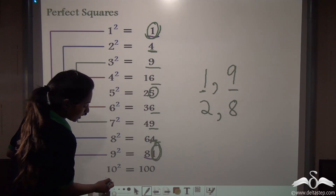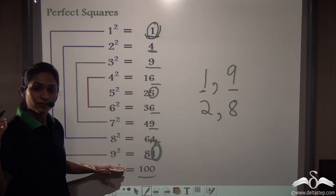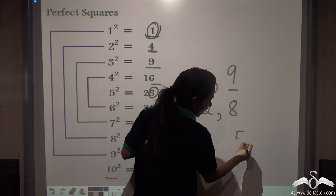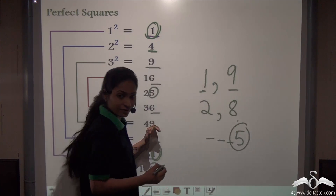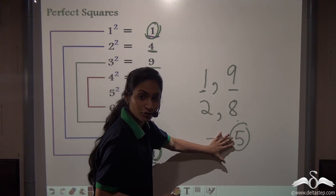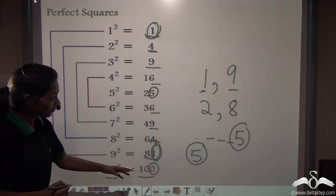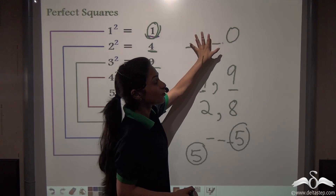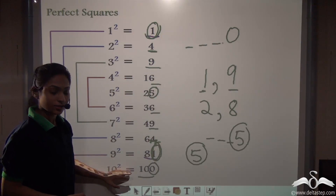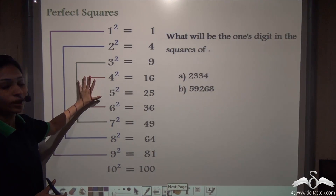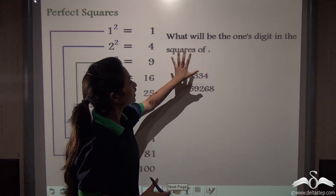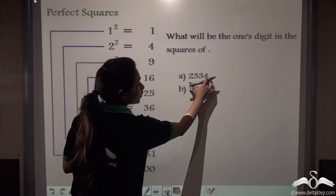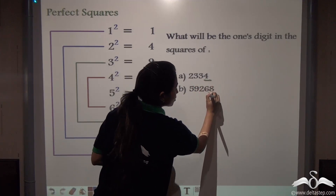And 0 — we know the multiple of 10, that is 10², 10³, 10 to the power 4, always ends in 0. So for 5 and 0, it is very simple: if a square number ends with 5 and you know it is a perfect square, then the square root will also end in 5. Similarly, if a number ends with 0 and it is a perfect square, then the square root will have 0 in its unit digit. Now just looking at the pattern, can you tell me what will be the ones digit in the squares of these numbers?